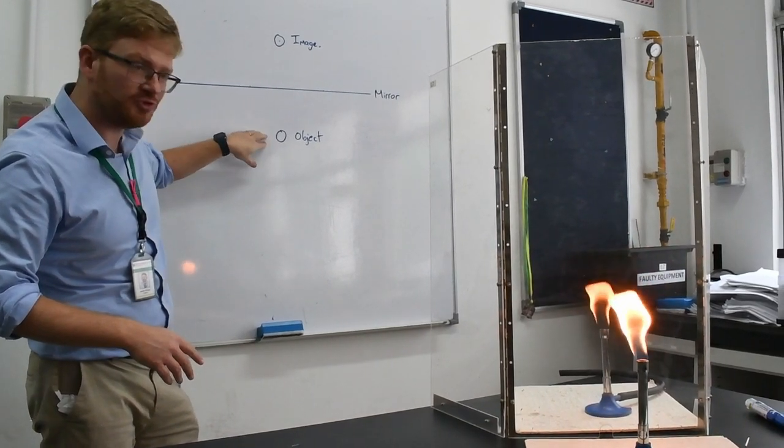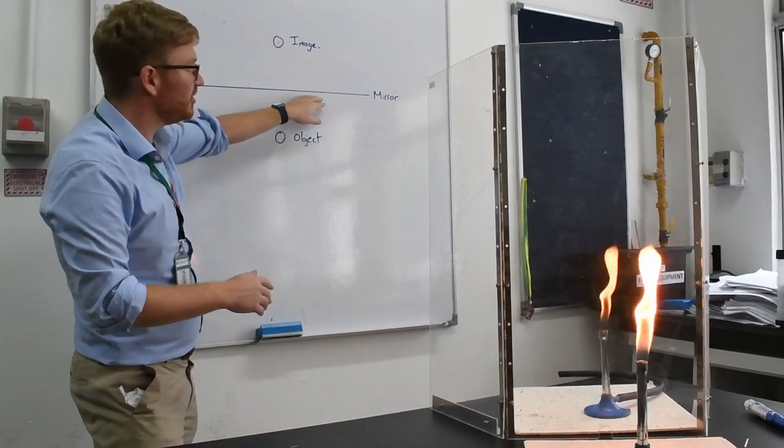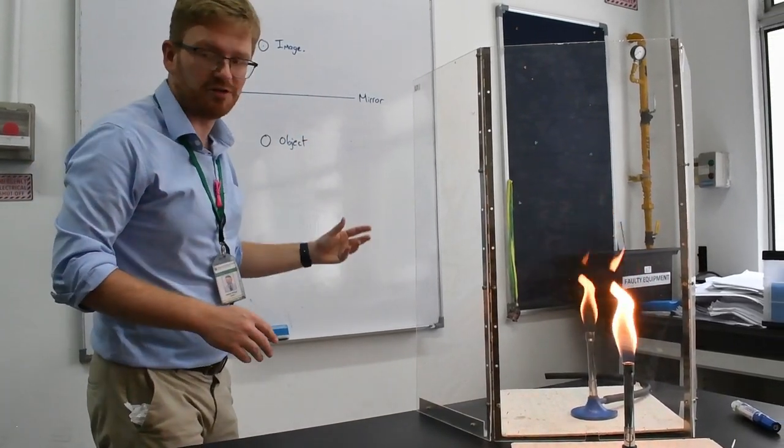So I've got the object in front, that's the flame. And I've got an image that appears to be inside the mirror.